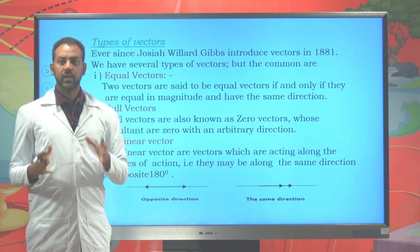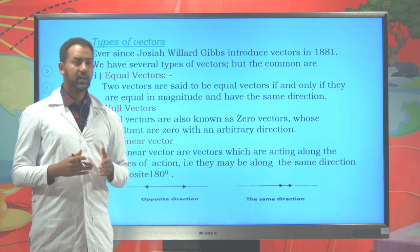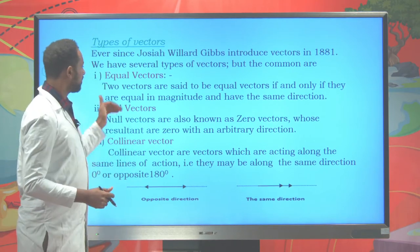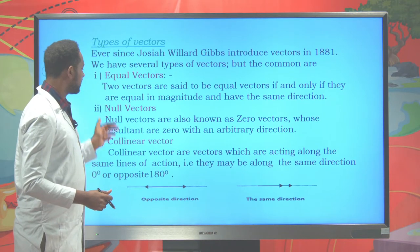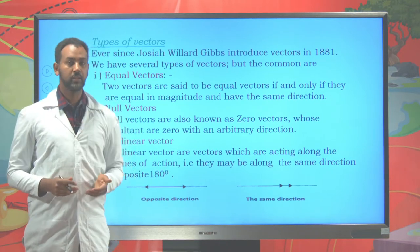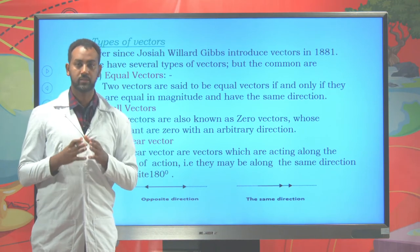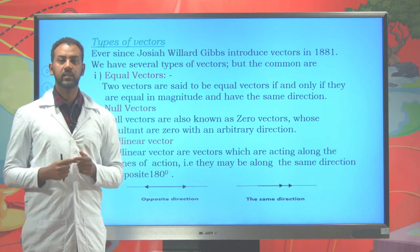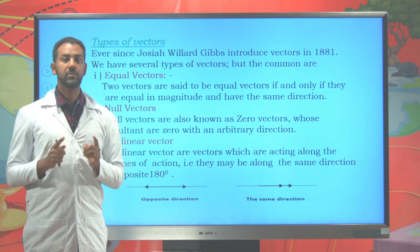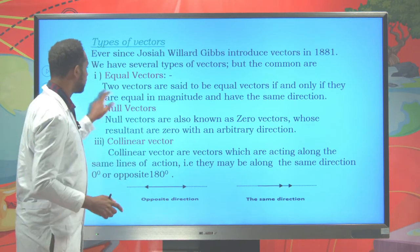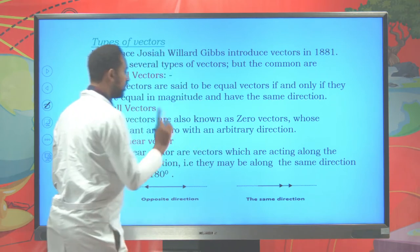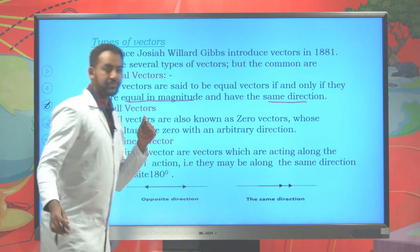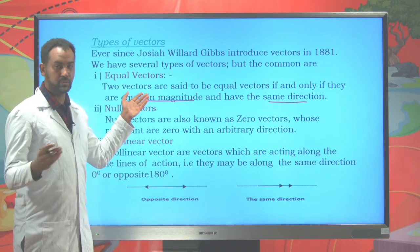Now let's try to classify the types of vectors. In physics we mainly focus on equal vectors, null vectors, collinear vectors, coplanar vectors, and unit vectors. Two vectors are said to be equal if and only if they have the same magnitude and the same direction — equal in magnitude and the same direction.